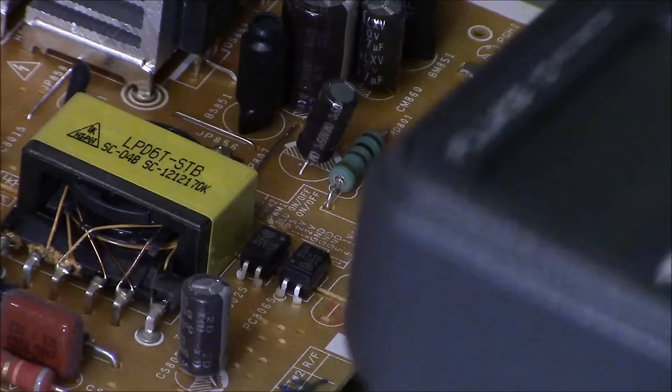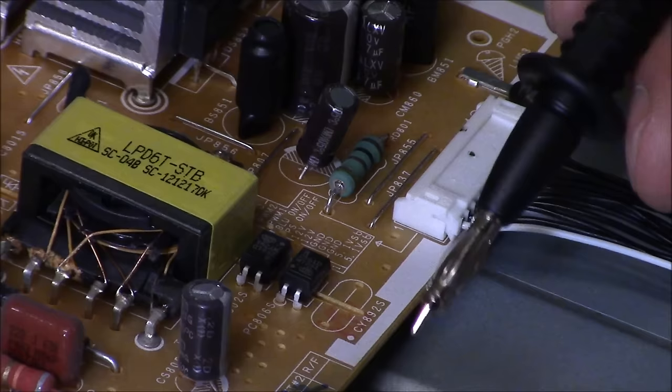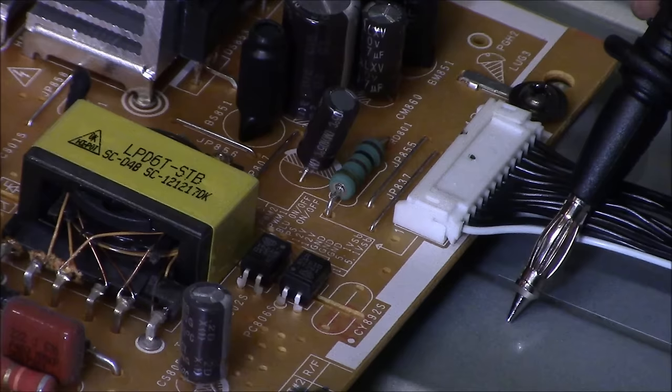Alright, so let's go ahead and check the standby voltage and that is the voltage to turn on the main logic board. We're going to put our black lead on the ground source which is the chassis of the TV or you can put it on a ground screw, but I like to put it on the chassis of the TV as a good ground source and that's the black lead on your meter.